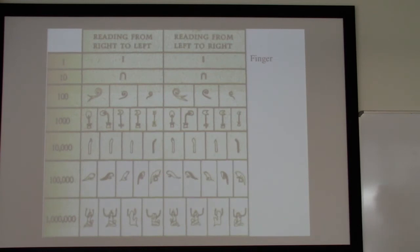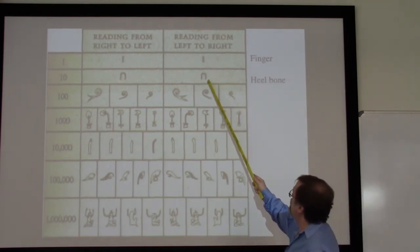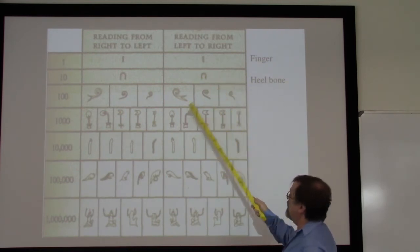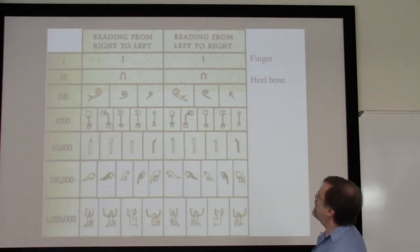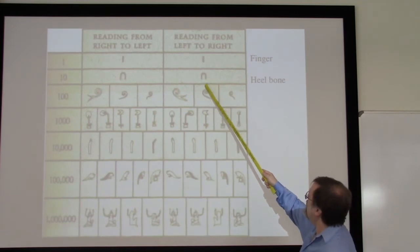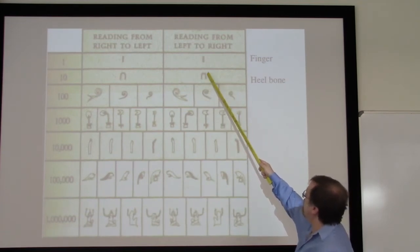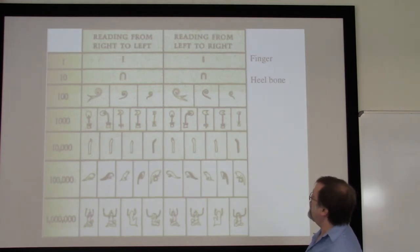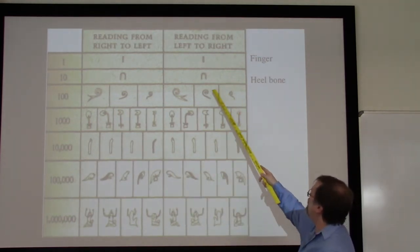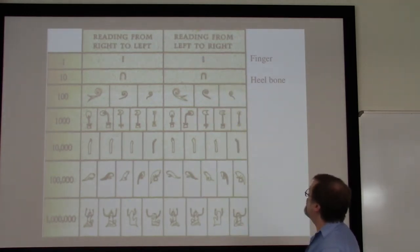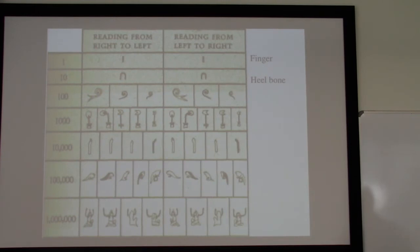The number one very likely just represents a finger. The 10 seems to represent a heel bone, which might indicate counting on fingers and toes. That would mean some kind of a base-20 system, so I'm not exactly sure why the heel bone symbol represents 10 specifically.